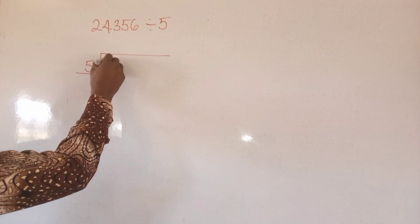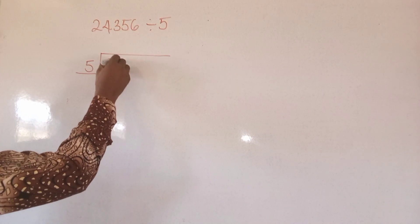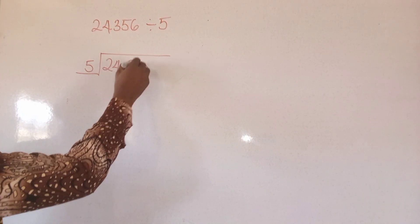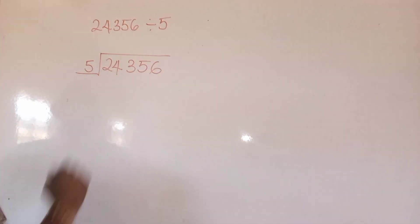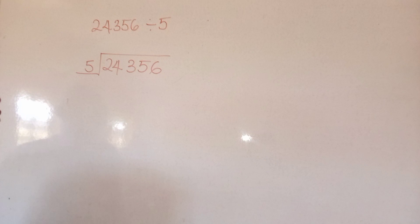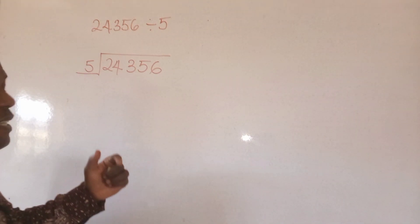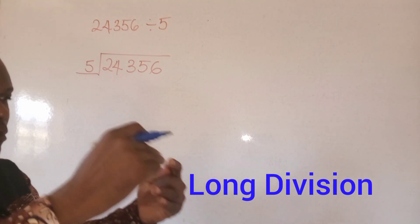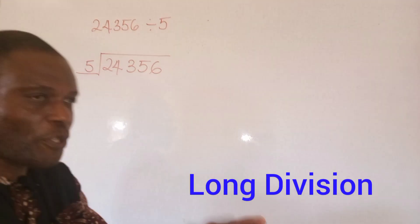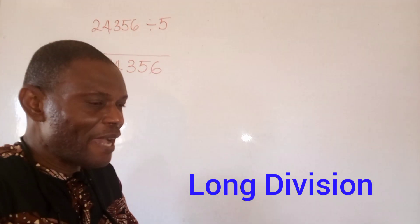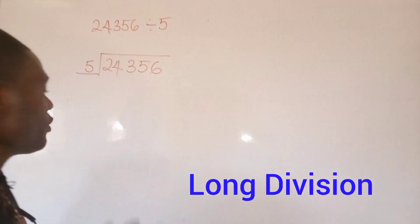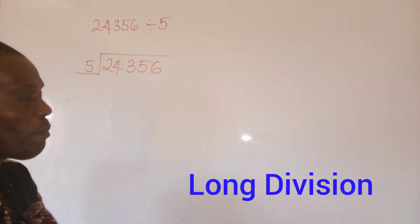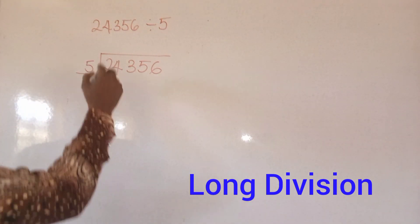We have 24,356. Now here you must divide, multiply, and subtract. You must follow that sequence: divide, multiply, and subtract.